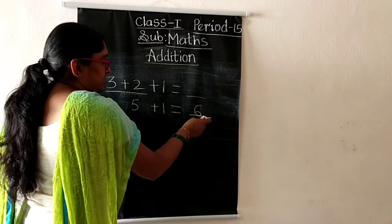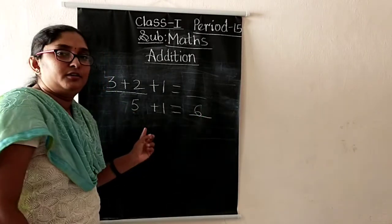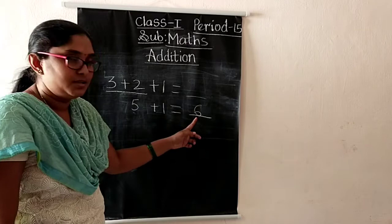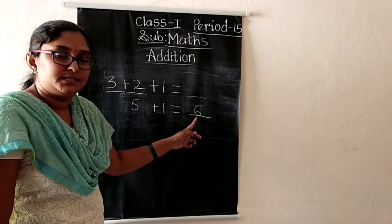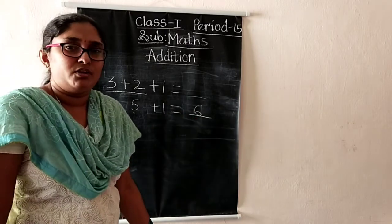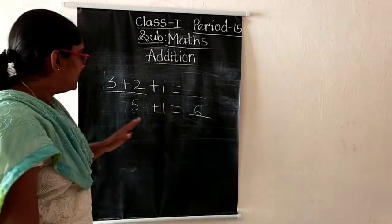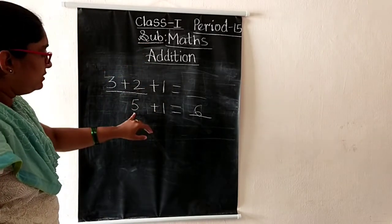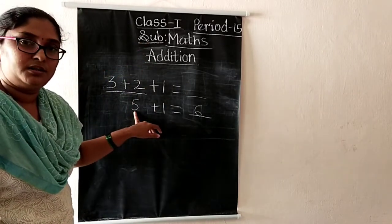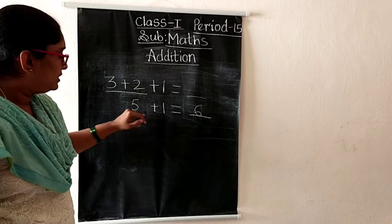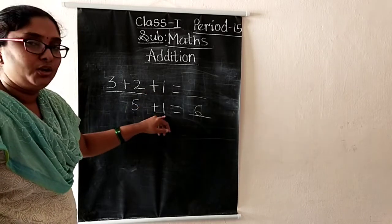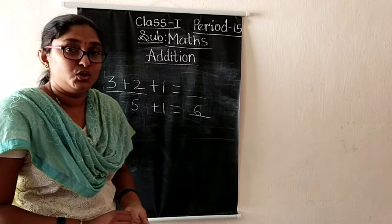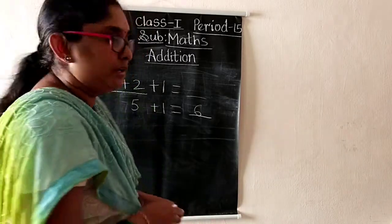How many? Six is the after-number of five. So the answer is six. Like this, if you have any three numbers, first add two numbers to get one answer, then add that answer and the remaining number. I hope you all understood.